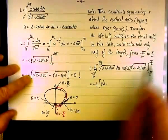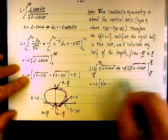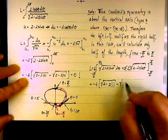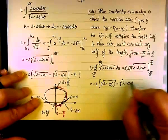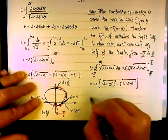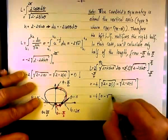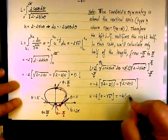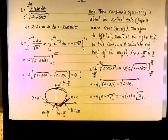Evaluating: at pi/2, sine of pi/2 is 1, so we have square root of 2 minus 2 times 1, which is square root of 0. At negative pi/2, sine is negative 1, so we have 2 minus 2 times negative 1, giving square root of 4, which is 2. Therefore we have negative 4 times (0 minus 2), which is negative 4 times negative 2, or 8. The arc length of the cardioid is 8.